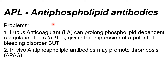APL or antiphospholipid antibodies are somewhat confusing — in vitro, in test tubes, they can prolong results. You might think the patient is a bleeder because APTT and all tests using phospholipid as a reagent are prolonged, since the antibody interferes with the phospholipid reagent, causing prolonged clotting time. But in reality, in vivo, inside the patient's body, antiphospholipid antibodies produce thrombosis.